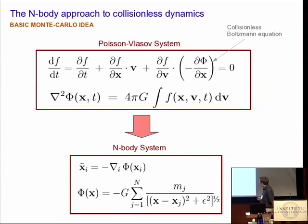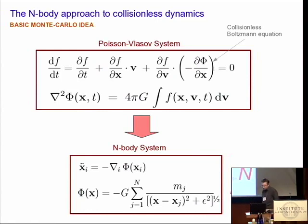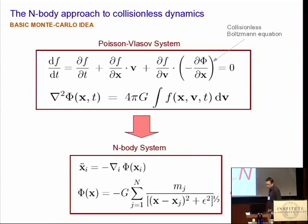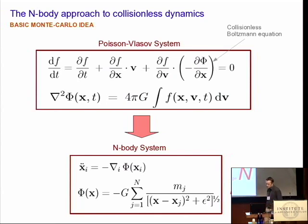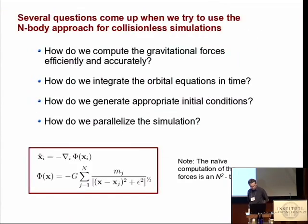The only slight sophistication is the introduction of a gravitational softening length on small scales. The problem is that the N we're talking about should really be very large — millions or even billions — and then the force sum becomes a real nightmare, because you have a genuine N-squared problem. For a million or a billion particles you can't easily evaluate the double sum; for every particle you would have to sum forces from all the others.